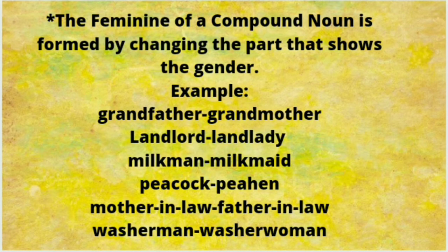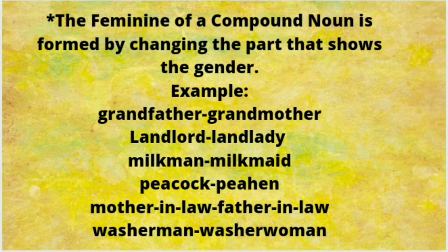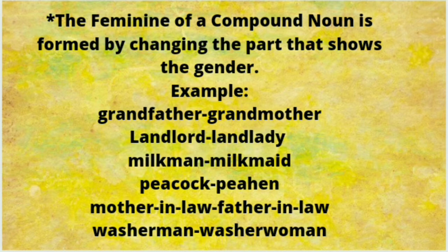Now we will see the formation of feminines of nouns. If a compound noun is given as masculine gender, how can we change it to feminine gender? The feminine of a compound noun is formed by changing the part that shows the gender. For example, man becomes woman, grandfather becomes grandmother, landlord becomes landlady, milkman becomes milkmaid, peacock becomes peahen, and washerman becomes washerwoman.